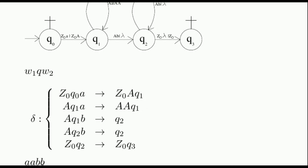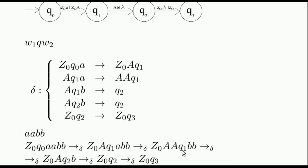For example, with this word as input, the initial configuration is this one, and we have this possible execution.